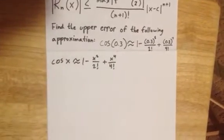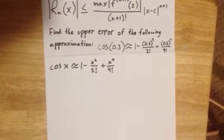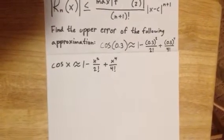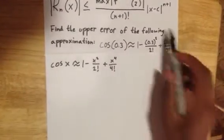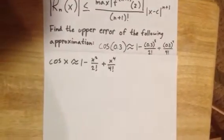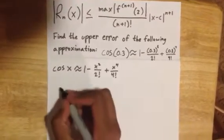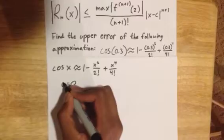Now we can go through this and use our formula, finding all the different parts so we can plug everything in. First is c, which is where our function is centered. Since this is a Maclaurin polynomial, we know it is centered at 0, so c = 0.